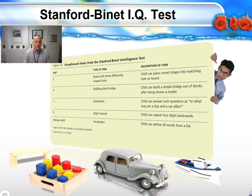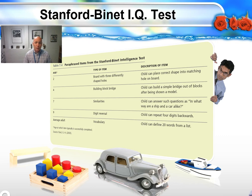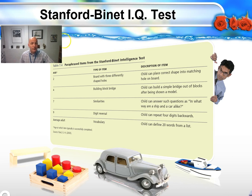At a mental age of nine on the Stanford-Binet, the task is digit reversal, which gets more complex — a child can repeat four digits backwards, and longer numbers make it increasingly complicated. For the average adult mental age, a child is considered very advanced if they can define 20 words from a list.